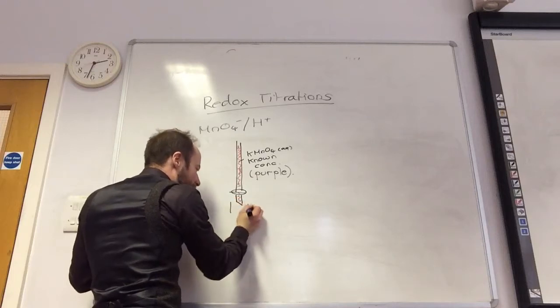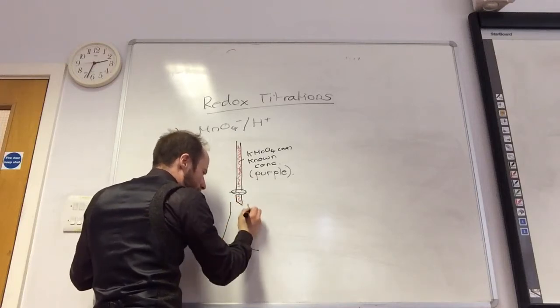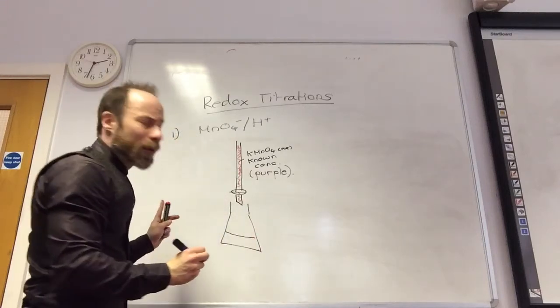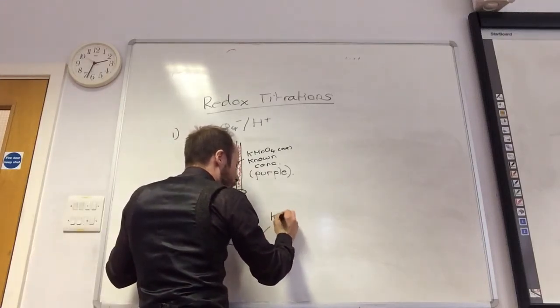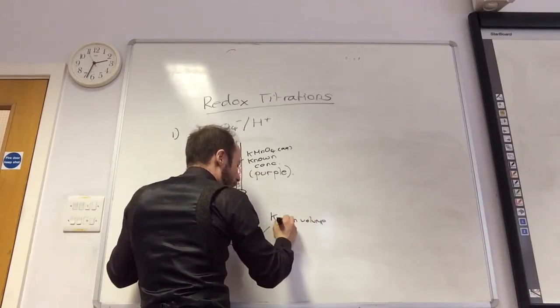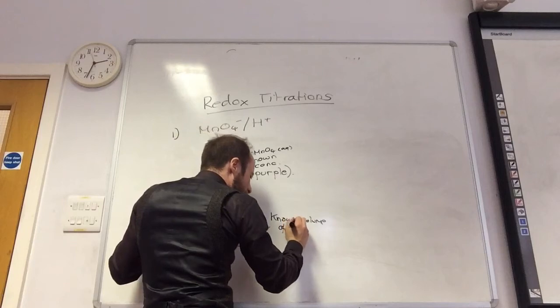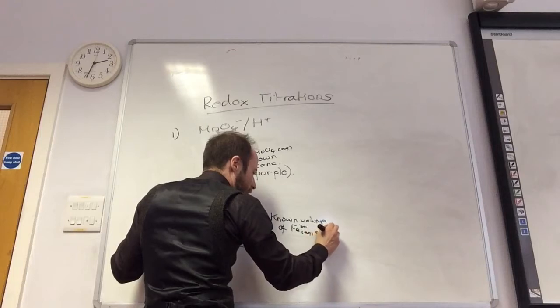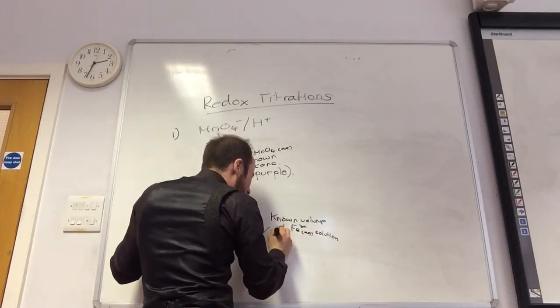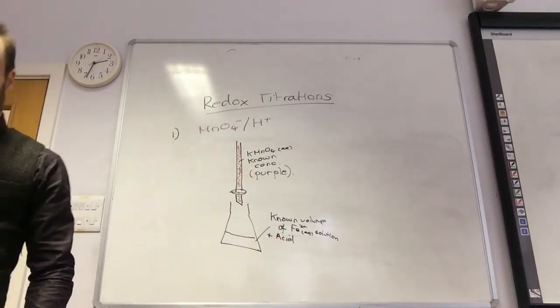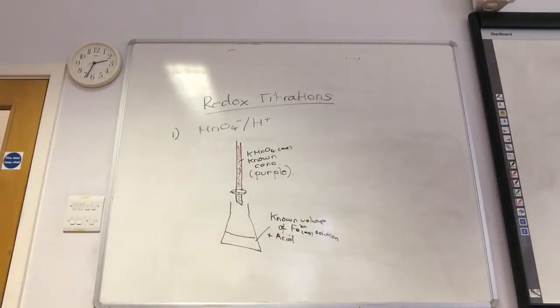In your conical flask, you generally put in here a known volume of iron 2 plus aqueous solution. And you also put in some acid because it needs to be under acidic conditions for this to work.